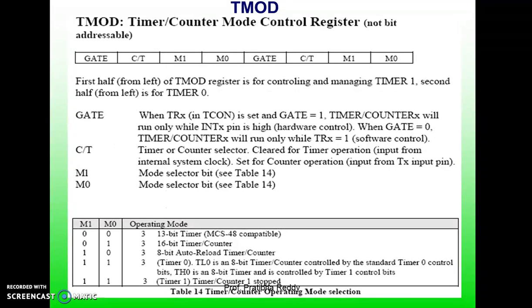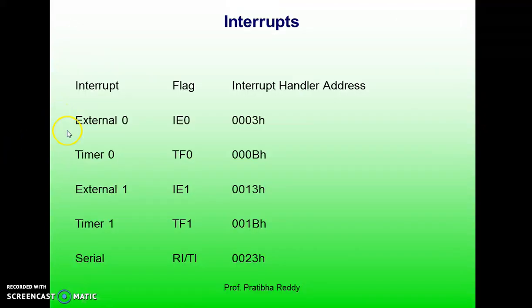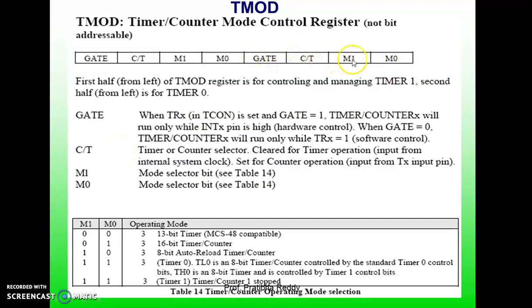Coming to the TMOD register — the Timer/Counter Mode Control register. Both timer 0 and timer 1 use the same register called TMOD to set the various timer operation modes. TMOD is an 8-bit register in which the lower 4 bits are set aside for timer 0 and the higher 4 bits are used for timer 1. In each case, the lower 2 bits are used to set the timer mode and the upper 2 bits to specify the operations.